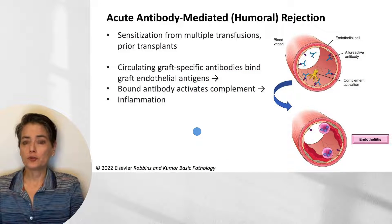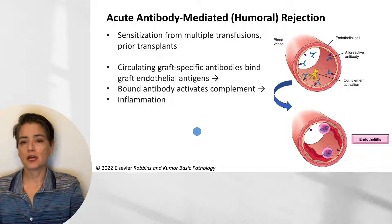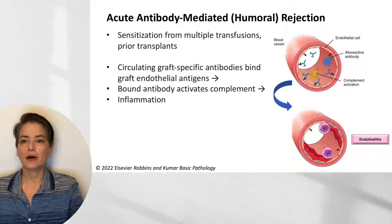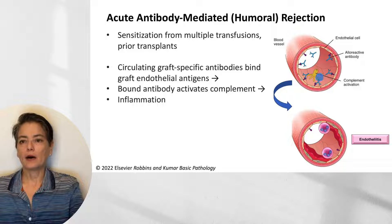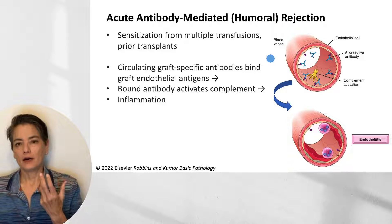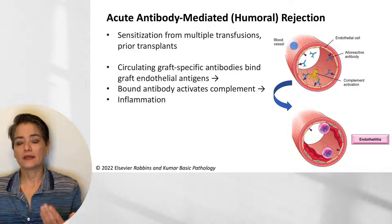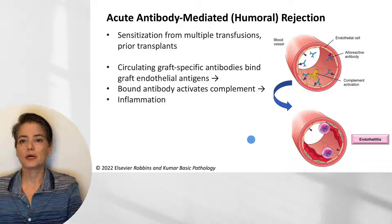Acute antibody-mediated, or humoral, rejection has the same mechanism as hyperacute rejection — with the same sensitization from multiple transfusions, previous pregnancies, or prior transplants — where an alloreactive antibody binds to an antigen on the endothelial cell, causing complement activation and inflammation. The difference between hyperacute and acute humoral rejection is really the dose of antibodies: a large concentration causes hyperacute rejection, while small amounts developing over time lead to acute humoral rejection.